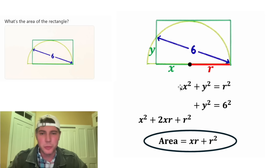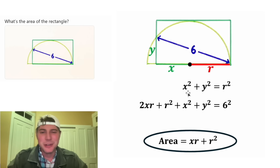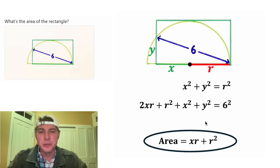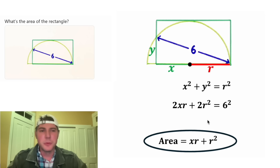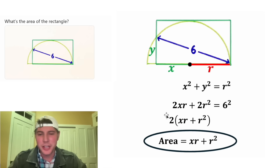We have X squared plus Y squared up here, so let's bring this X squared over. Now these look the same. We know that X squared plus Y squared equals R squared, so in place of X squared plus Y squared, let's substitute R squared. Then R squared plus R squared is 2R squared. Combining everything, both terms have a 2, so let's factor that out: 2 times (XR plus R squared). And distributing that 2 brings us back, so these are the same.